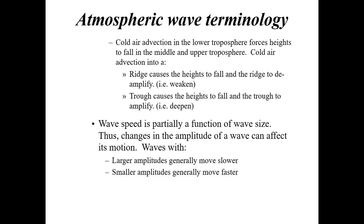Cold air advecting into a ridge causes the heights to fall and the ridge to deamplify or weaken — upper-level ridges do not like cold air. If you get cold air coming in it's more dense, causes the heights to fall, and the ridge weakens. On the other hand, cold air advection coming into a trough — troughs love colder air. Bringing colder air into the lower troposphere causes heights to fall and the trough to amplify or deepen in the middle to upper troposphere.